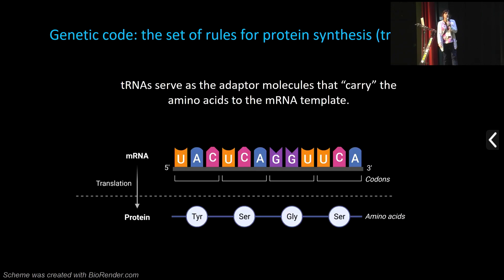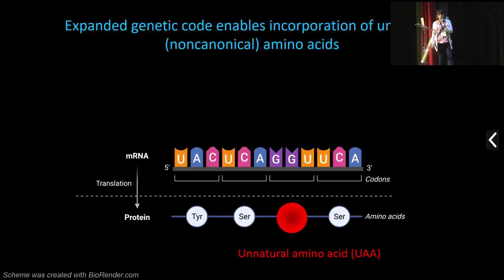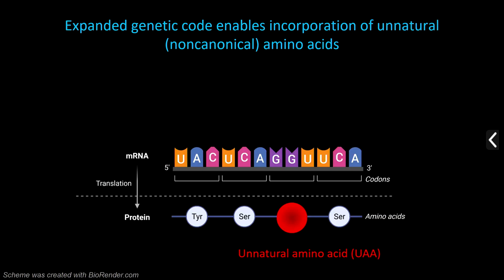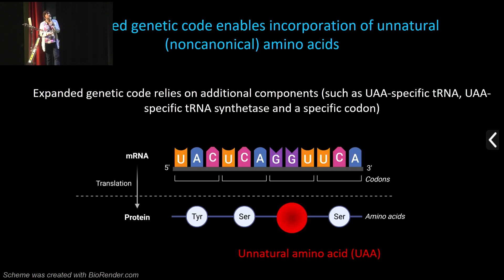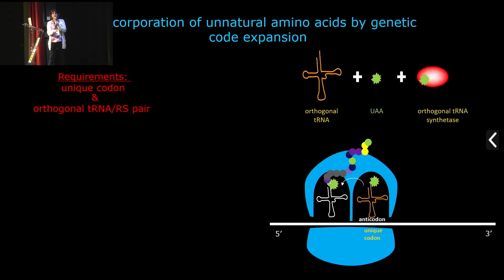Messenger RNA has triplets of nucleotides called codons, and each codon represents one amino acid. Very important are the transfer RNA molecules, which serve as adapter molecules carrying the correct amino acid during protein translation in the ribosome, based on these codons on the mRNA. These tRNAs do not work alone — they need enzymes called aminoacyl-tRNA synthetases, which are essential for coupling the correct amino acid to the correct tRNA.